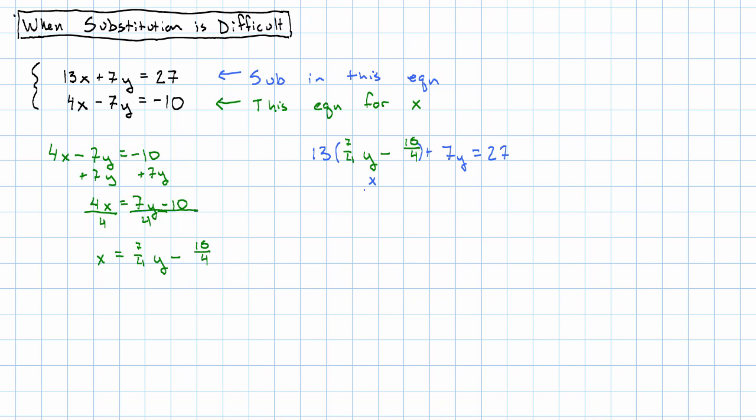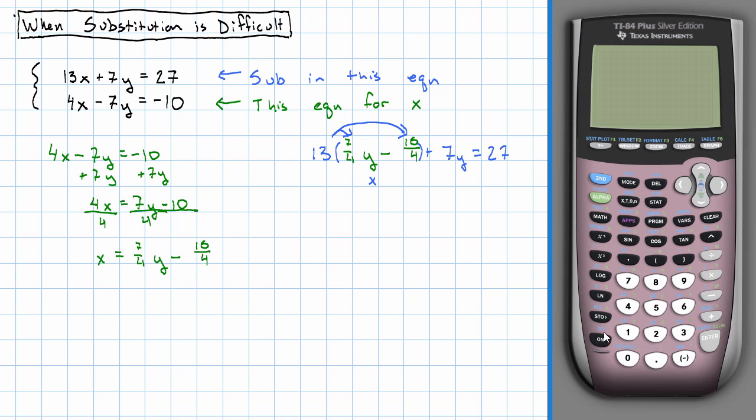Now we have an equation in just one variable, namely y. So we'll have 13 times 7 fourths, 22.75y minus 13 times 10 fourths, 32.5 plus 7y.